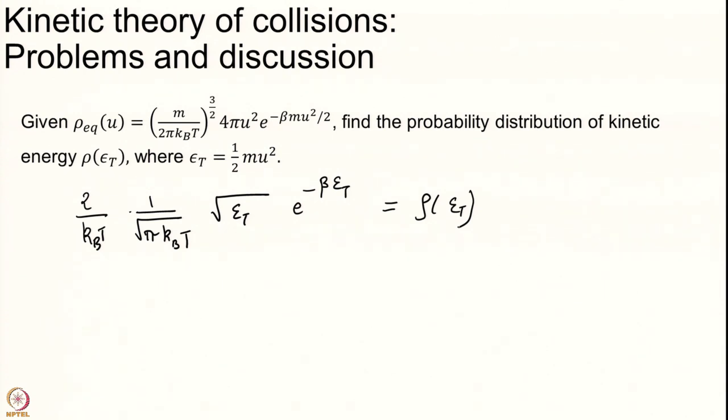The net result I get is I have written here you can simplify this 2 over kT into 1 over root pi kBT root epsilon e to the power of minus beta epsilon. This is equal to rho of epsilon. You can go back one slide make sure that this equation is correct I have cancelled all the factors correctly. This is about transformation of variables very important concept.